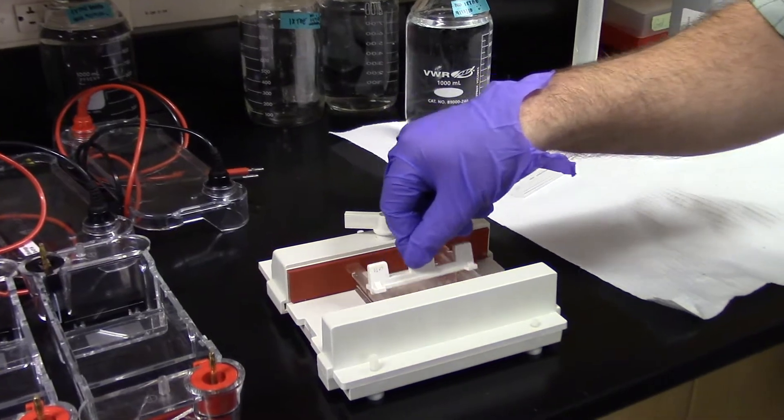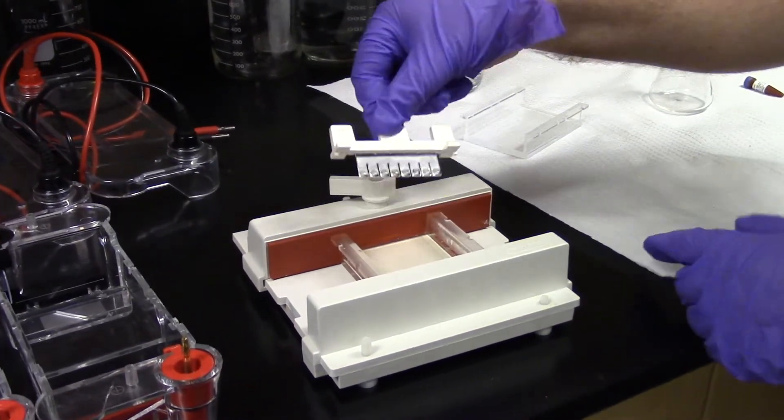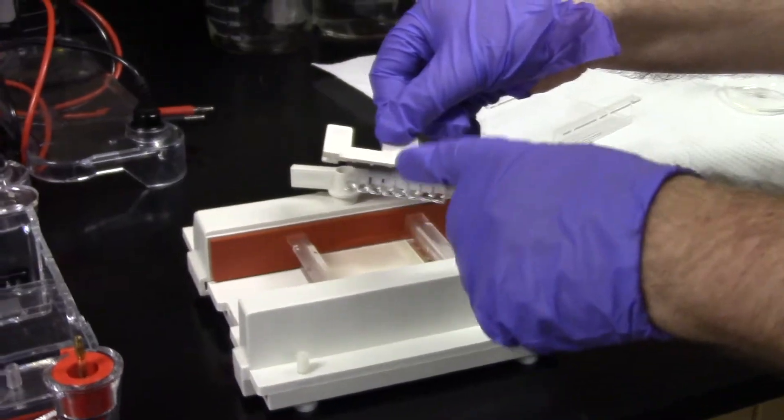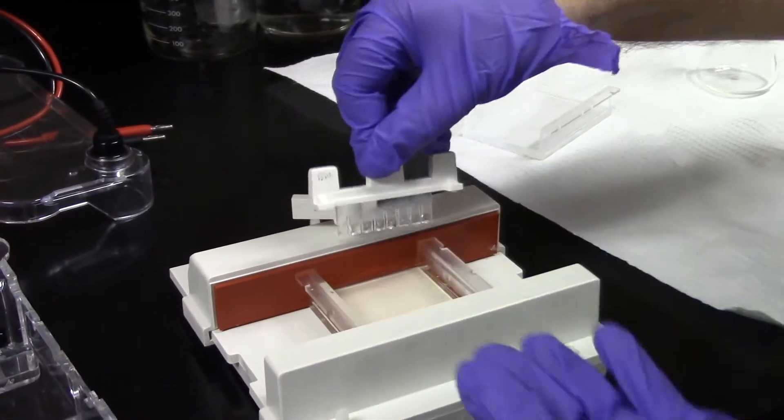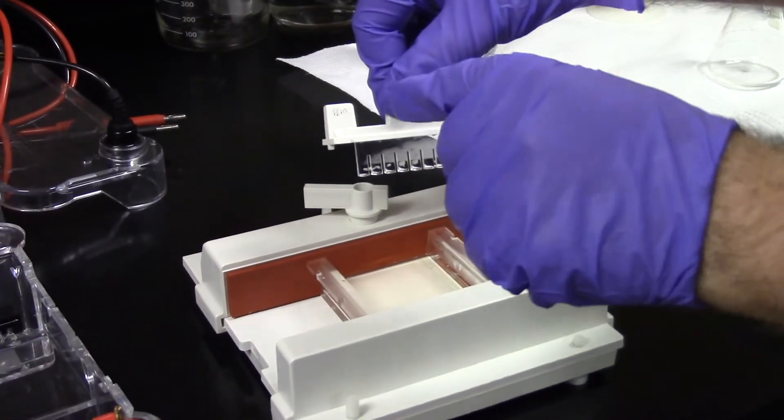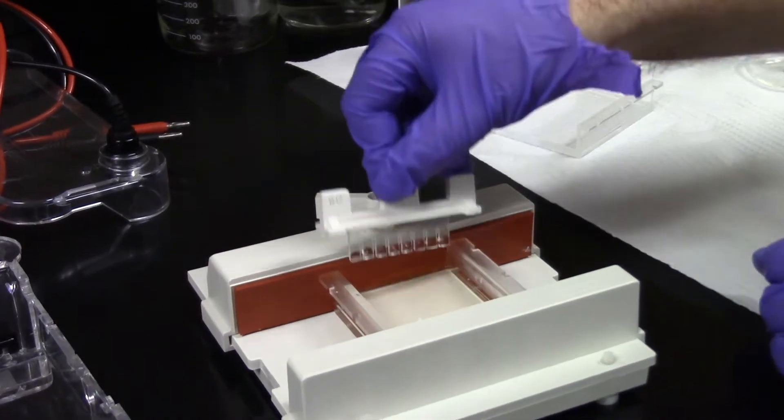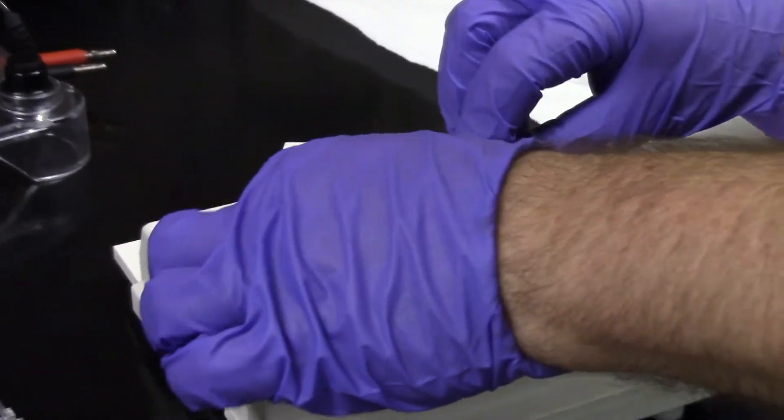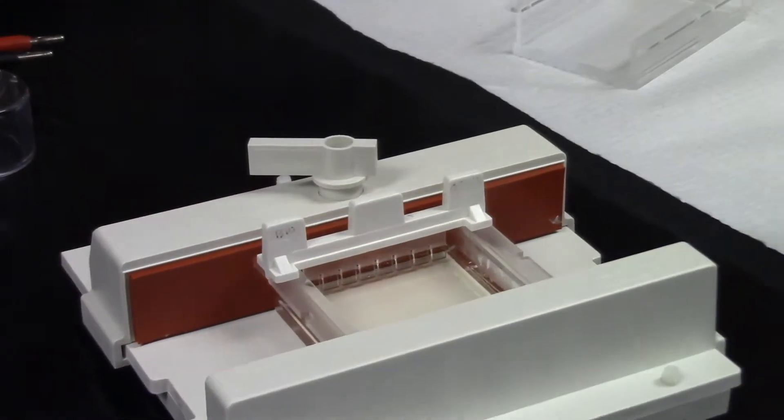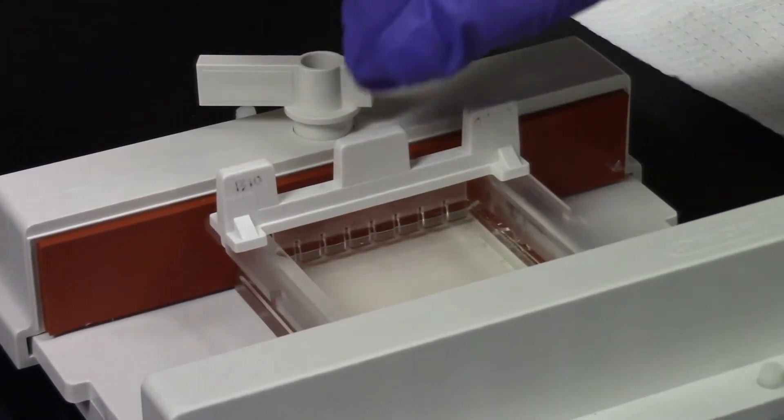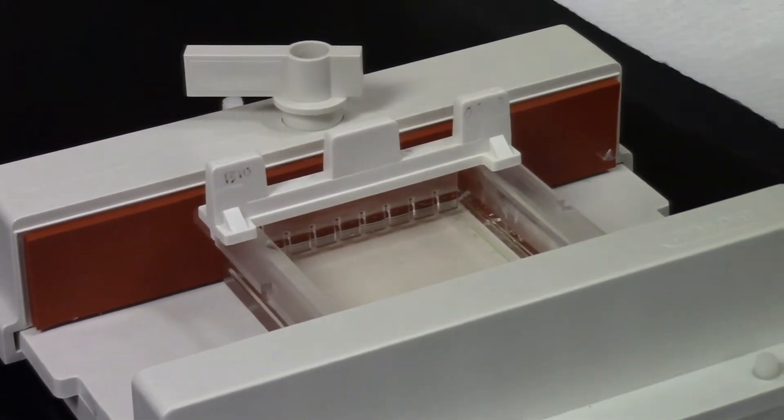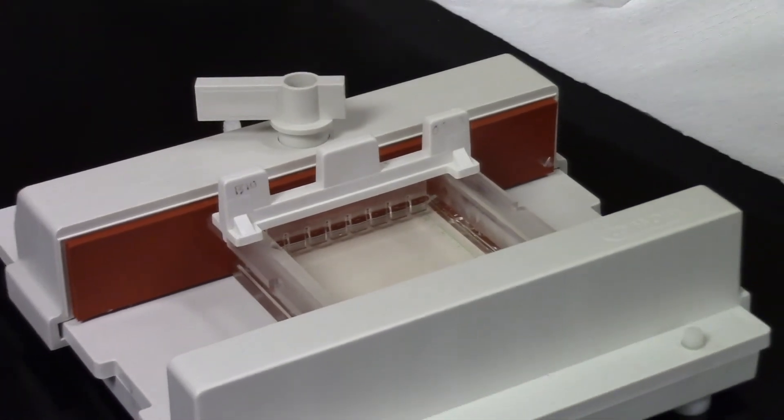I'll remove the bubbles. And I'll place this comb. The comb has slots in it. The slots will have gel between them. The place where it's plastic on the combs will displace the agarose liquid. So that when I pull this out after it has solidified, there will be wells.